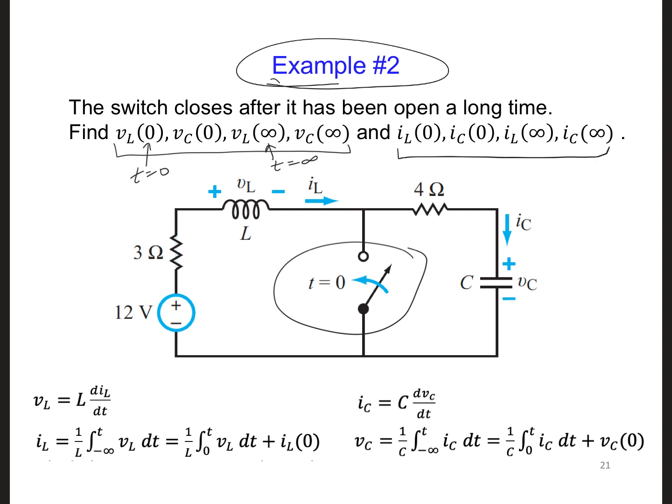So I think in this case, it'll be important to draw the circuit at three different time periods. At T equals 0 minus, so that's right before the switch is closed, since it's closed at T equals 0.